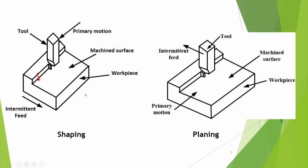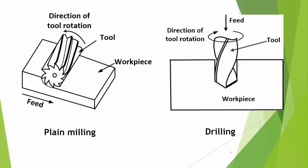In the planing operation the work piece is moving, so primary motion is given by the work piece, and intermittent feed is given to the tool or work piece, producing a plane surface. So you have seen shaping and planing.